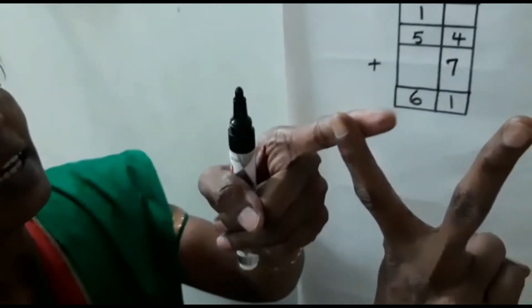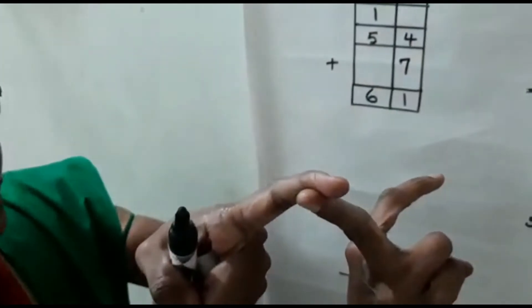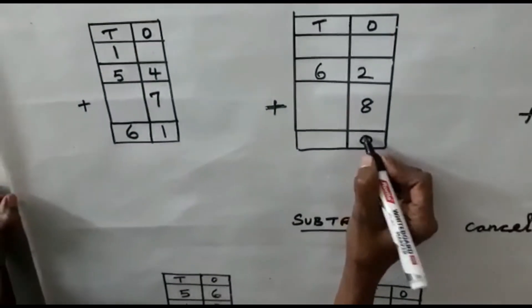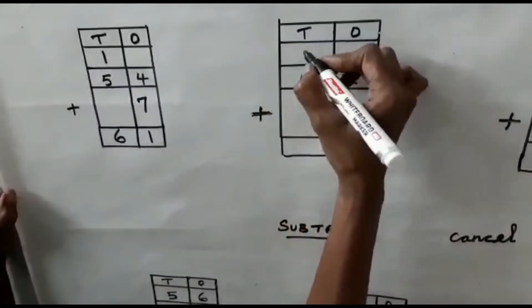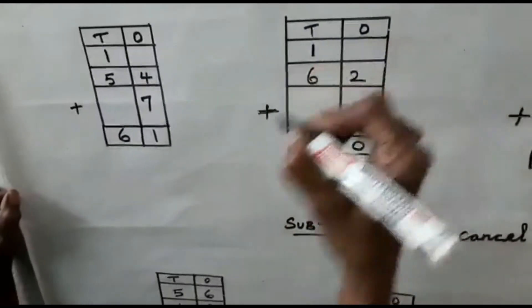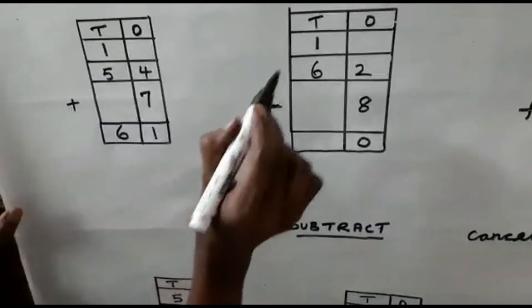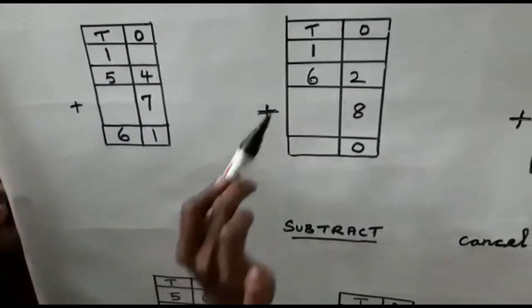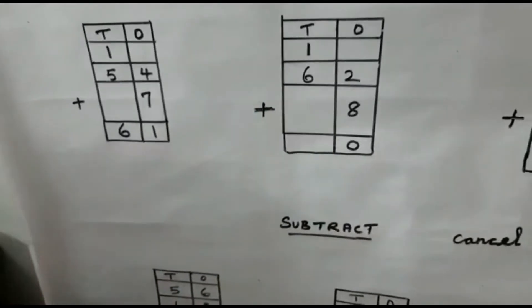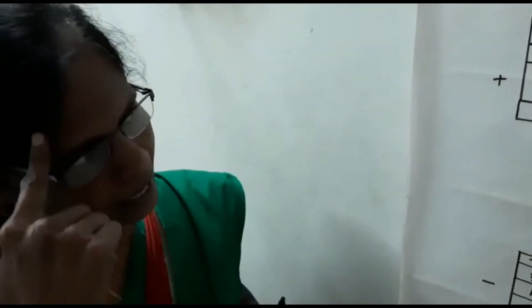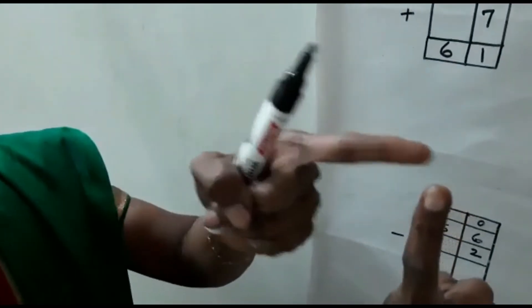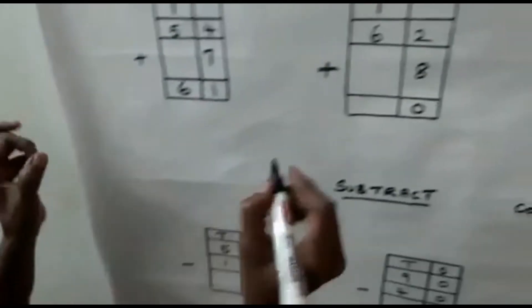Now after 8: 9, 10. You must put 0 in the ones place and carry 1 to the tens side. Now which is the biggest here? 6 is the biggest number. 1 is the smallest number. So 6 in the mind and 1 on the finger. After 6 — 7. 7 is the answer.